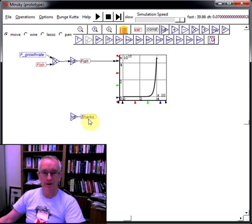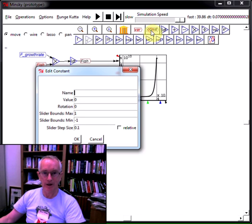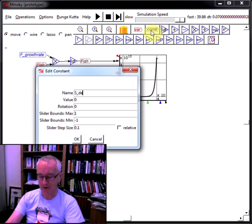Now of course we know that sharks will starve in the absence of fish. They don't need seagrass. So let's just bring out a death rate now for sharks. I click here and I'll call this S death rate.